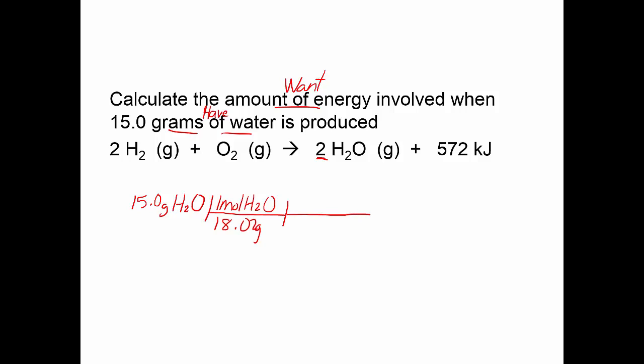The molar mass is 18.02. Go to your balanced equation — here's your ratio: for every 2 moles of water, you have 572 kilojoules released. Then pick up your calculator: 15 divided by 18.02 times 572 divided by 2 — however you do it. This time we will look at significant figures: 15 has 3, 572 has 3, so we can have 3 in our answer. It would be 238 kilojoules. Energy involved — this is released. The negative means it's exothermic and has been released.